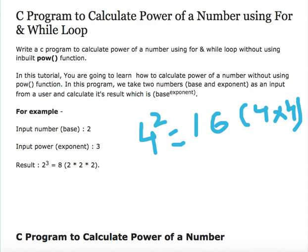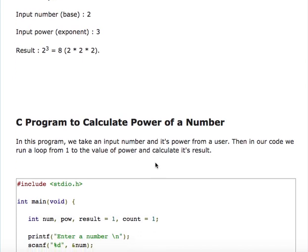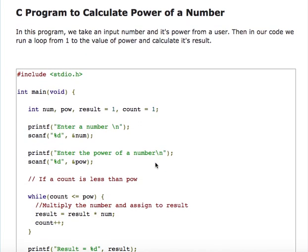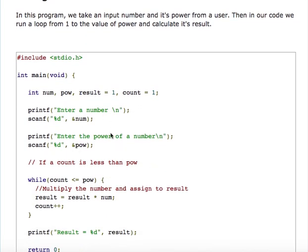So here is my C code. In the first example I'm showing how to calculate power of a number using while loop. I have declared few variables here: num, power, result, count, and initialized the result and count with 1.